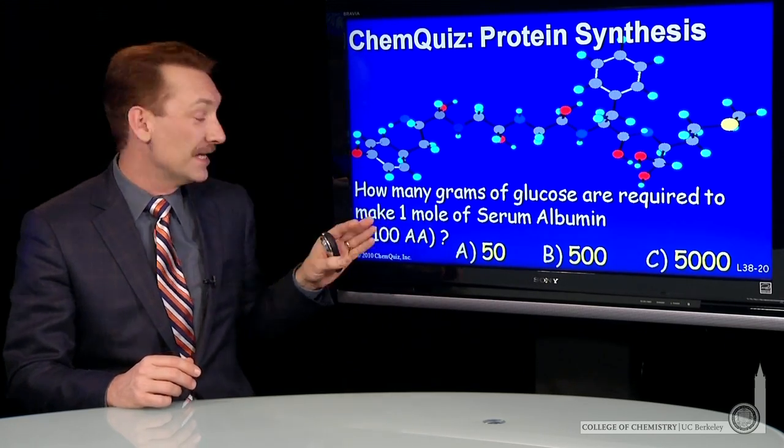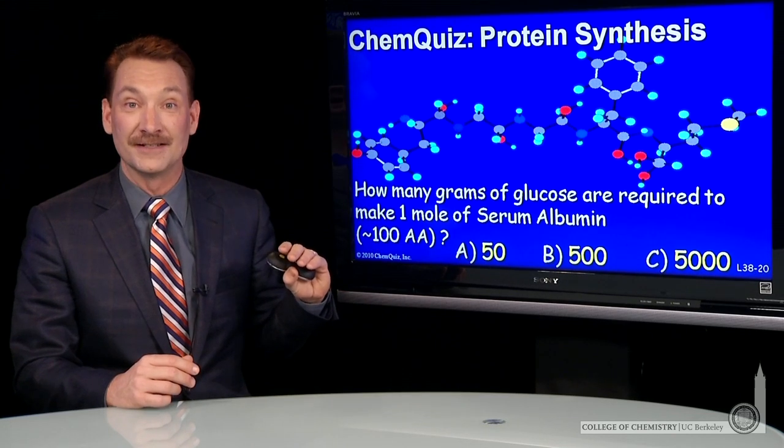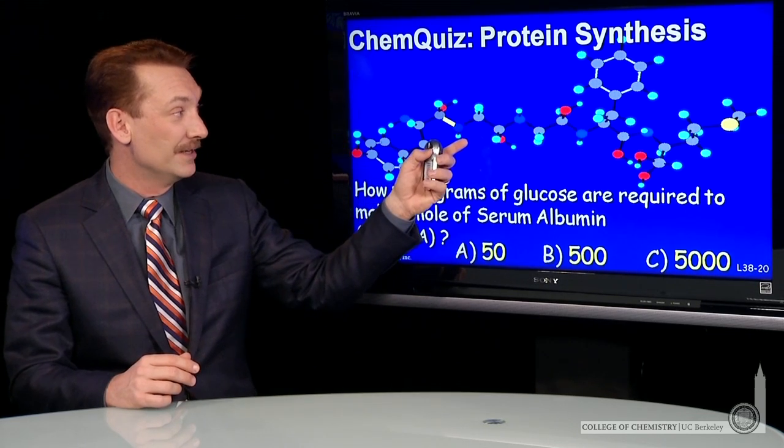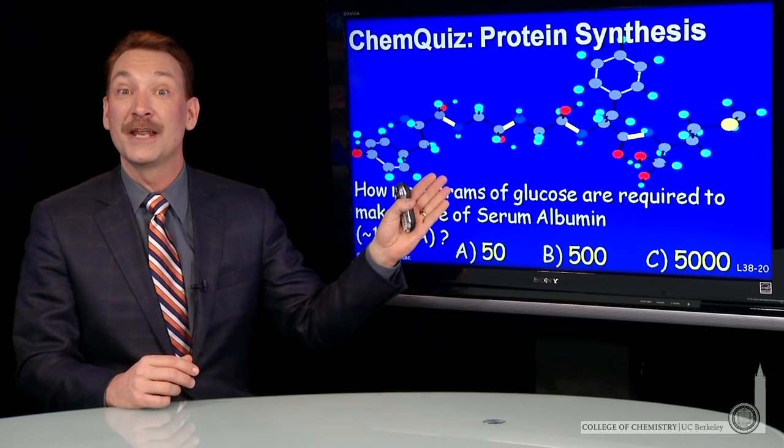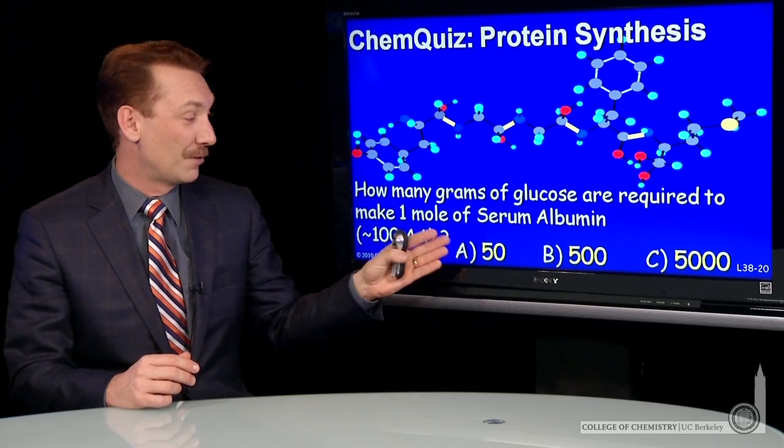Now, serum albumin is around 100 amino acids. So I need about 100 peptide bonds per mole of serum albumin. How many grams of glucose does that require?